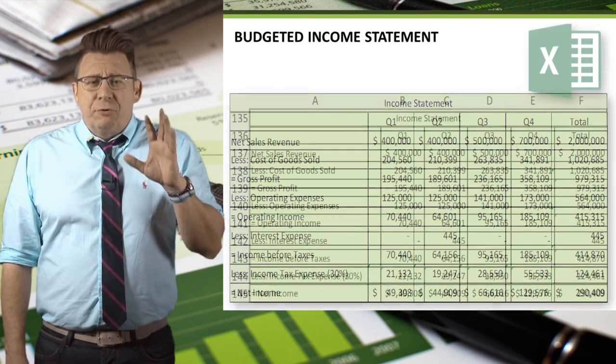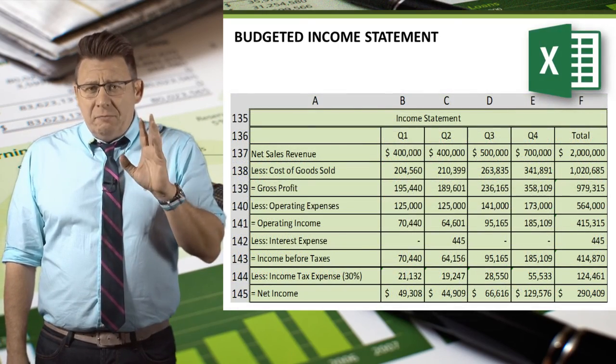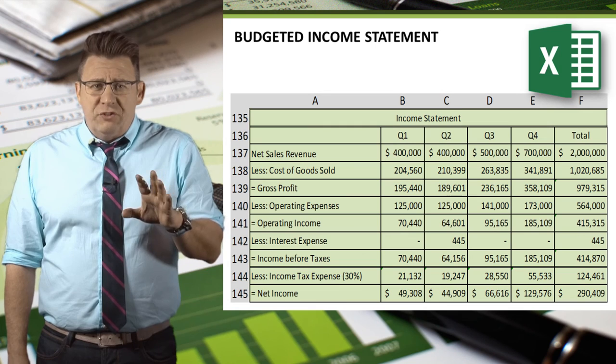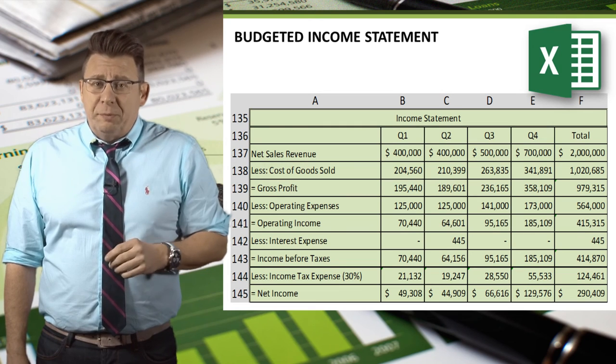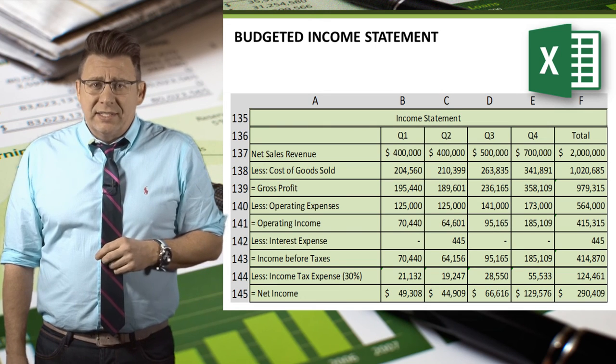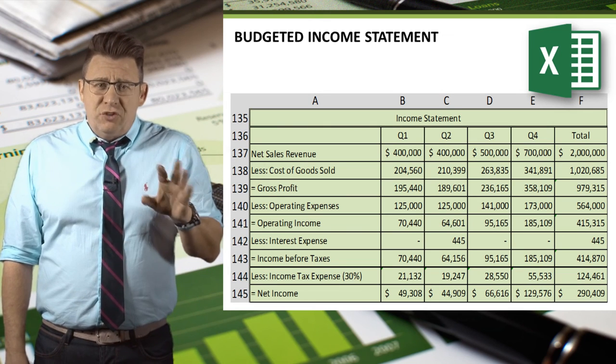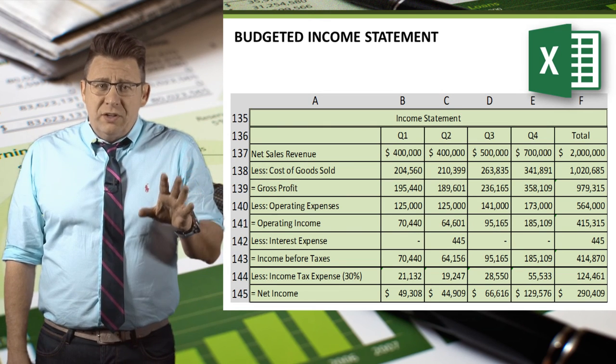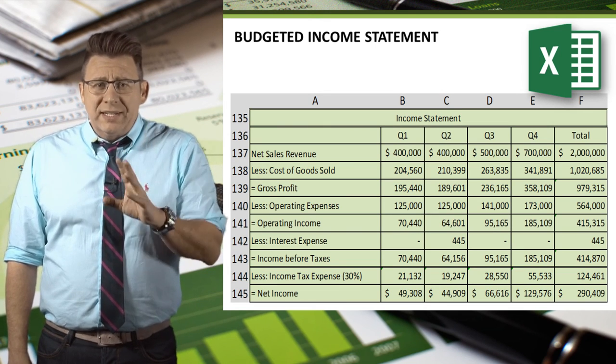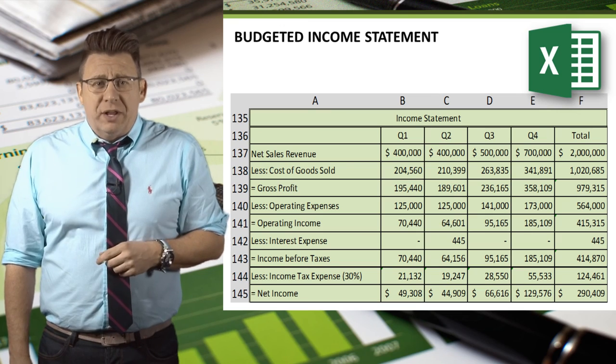As I have repeatedly mentioned, this budget is best built by linking cells in the Budgeted Income Statement to the related cells in the budgets from where the data is retrieved.